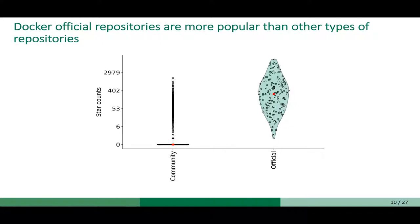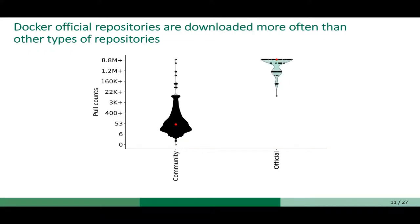Here you can see the comparison of number of star counts between community and official repositories. The reason we don't have verified and certified repositories here is that the data for those were not available on Docker Hub. If we compare the number of pull counts, we can see that official repositories are downloaded more often than other types. So for this study, we decided to focus on the official repositories.